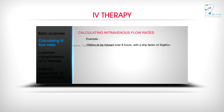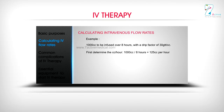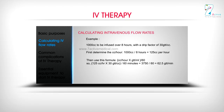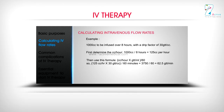Example: 1000 cc to be infused over 8 hours with a drip factor of 30 gutta per cc. First, determine the cc per hour: 1000 cc per 8 hours equals 125 cc per hour. Then use this formula: cc per hour multiplied by gtt per mL, divided by 60. So, 125 cc per hour multiplied by 30 gtt per cc, divided by 60 minutes, equals 3750 divided by 60, equals 62.5 gtt per minute.